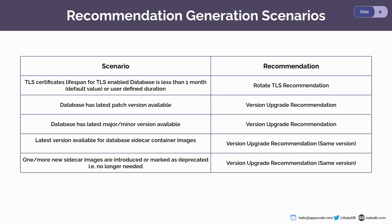Now the recommendation engine will generate a version upgrade recommendation pointing to the same version, so that while executing this recommendation, KubeDB can upgrade the container image version according to the latest image provided in the catalog. If a new sidecar is introduced or an existing sidecar is deprecated for a particular mode of a database, then users also don't need to think about the manual upgrade process — the recommendation engine will take care of these scenarios and notify users by generating a same version upgrade recommendation with user-friendly upgrade details.